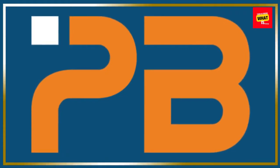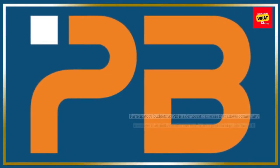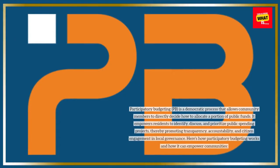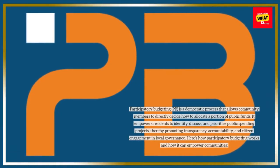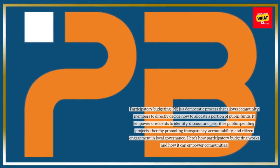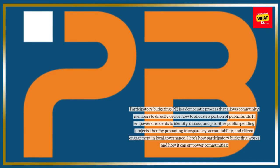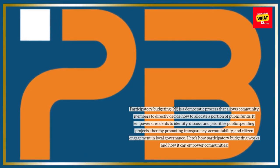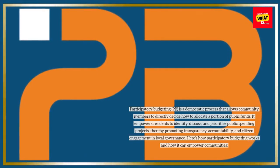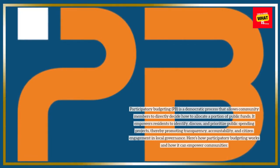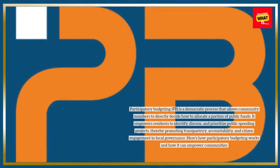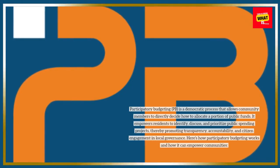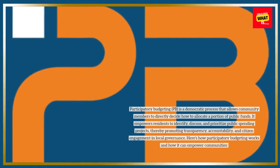Participatory budgeting, or PB, is a democratic process that allows community members to directly decide how to allocate a portion of public funds. It empowers residents to identify, discuss, and prioritize public spending projects, thereby promoting transparency, accountability, and citizen engagement in local governance. Here's how participatory budgeting works and how it can empower communities.